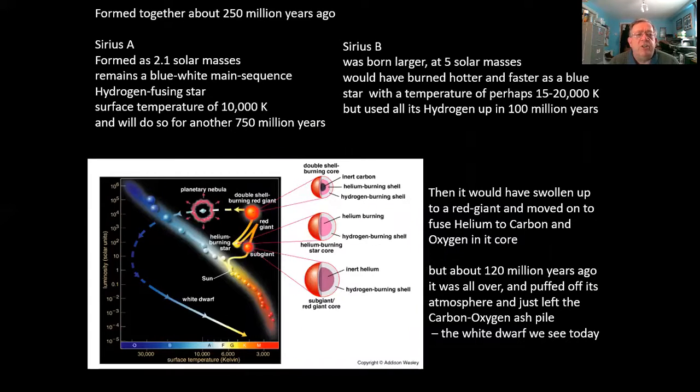The history of the Sirius system, Sirius A and Sirius B, is that they were both formed roughly 250 million years ago. Sirius A started as a 2.1 solar mass star and it remains so. It's a blue-white main sequence star, which means it's fusing the element hydrogen, the simplest element, into helium inside its core with an outer temperature about 10,000 degrees Kelvin. It'll probably continue doing that for another 750 million years before the core hydrogen will start to become exhausted.